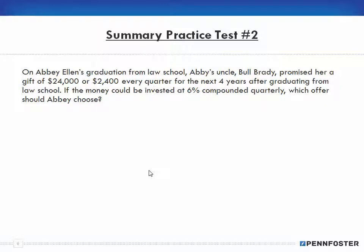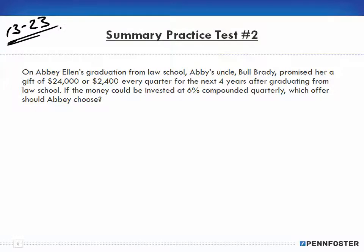Number two: on Abby Ellen's graduation from law school, Abby's uncle Bill Brady promised her a gift of $24,000 or $2,400 every quarter for the next four years after graduating, where the money could be invested at 6% compounded quarterly. Which offer should Abby choose? Go back and watch word problem 13-23 — this is exactly the same as that particular word problem.